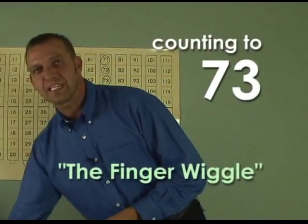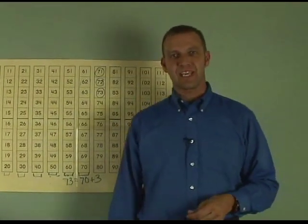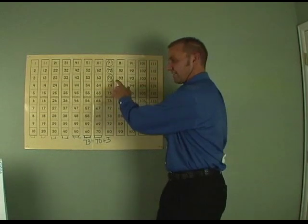Today, we're going to continue with our finger wiggle. We will do 73. Remember, boys and girls, my body is the dividing break-apart stick. Over here are my 10s. Over here are my 1s. We are counting to 73. Are you ready? Let's go.